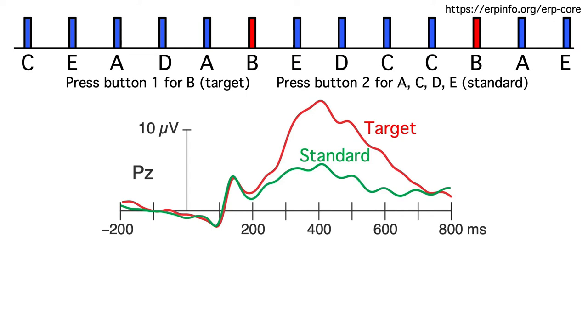Now, there are many different ERP components that sum together in these waveforms. Some of them are bigger for oddballs and some of them are the same for standards and oddballs. They're all mixed together in our scalp electrodes. How can we isolate the probability sensitive P3 from all these other components?